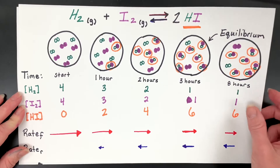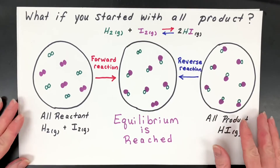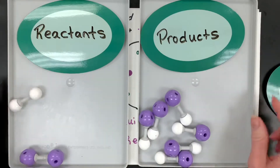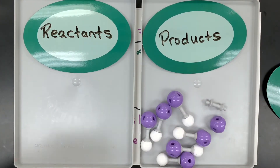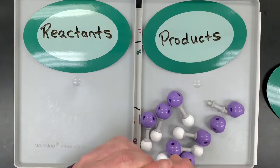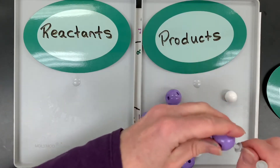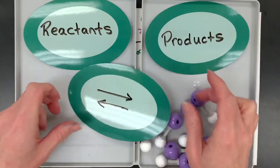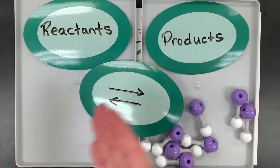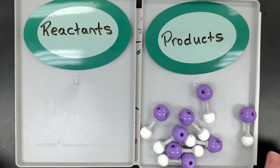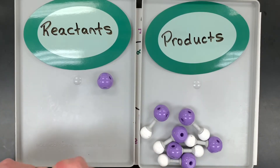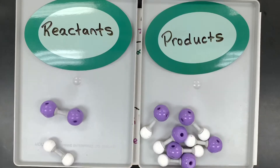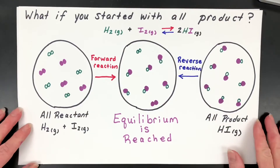What if you started with all product? Products can turn back into reactants, or they can serve as the starting point. What chemists have found is that they reach the same equilibrium position whether you start with all reactant or all product. As this reaction went back and forth, it reached the same equilibrium position — called the equilibrium constant — which is my next video.